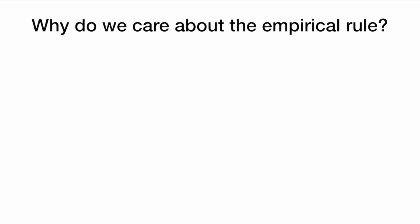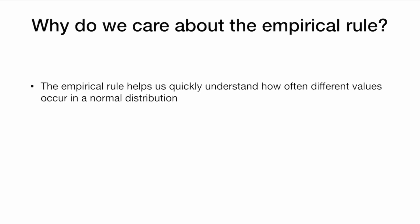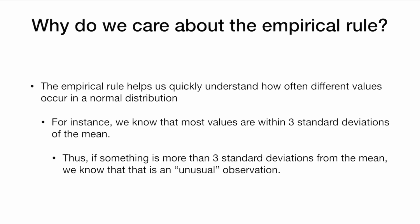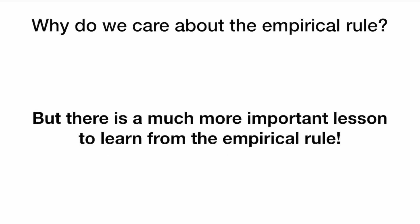So why do we care about the empirical rule? The empirical rule helps us quickly understand how often different values occur in a normal distribution. For instance, we know that most values are within three standard deviations of the mean. Thus, if something is more than three standard deviations from the mean, we know that that is an unusual observation. So the empirical rule gives us some sense of what values are common or uncommon in a normal distribution.